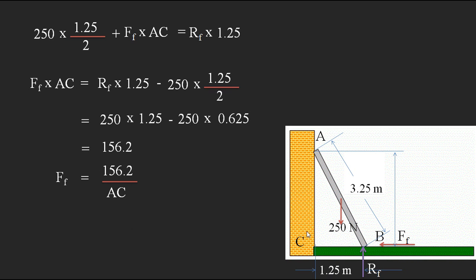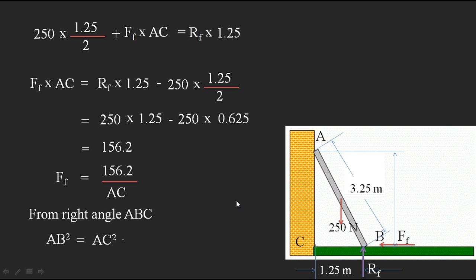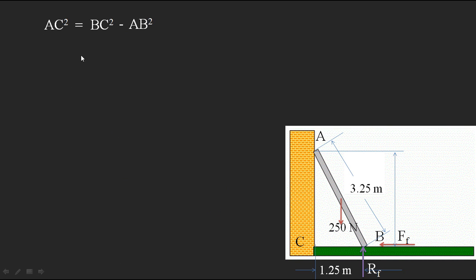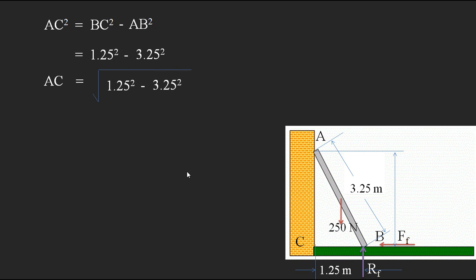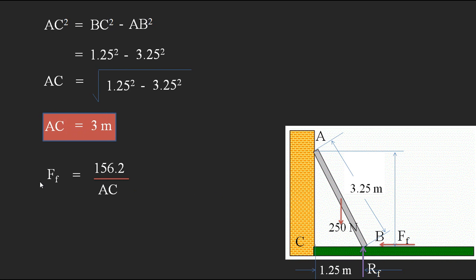To find AC, we apply the Pythagorean theorem to right triangle ABC. We have: AB² = AC² + BC², so AC² = AB² − BC². Here BC = 1.25 m and AB = 3.25 m. Therefore: AC = √(3.25² − 1.25²) = √(10.5625 − 1.5625) = √9 = 3 meters.